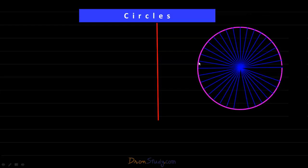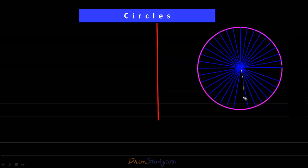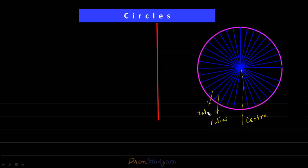All the points on this circle are at equal distance from this fixed point. This fixed point is called the center, and the line segment from the center to any point on the circle is called the radius. The lengths of all these radii are equal, and since there are infinite number of points on the circle, we can draw infinite number of radii.